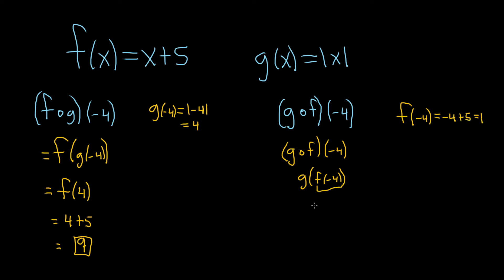So we just have g of, well we said it was 1, so g of 1. So now we look at g. g of x is the absolute value of x. So this is equal to the absolute value of 1, which is just equal to 1. And again, I suppose I should have some equal signs here for added clarity.